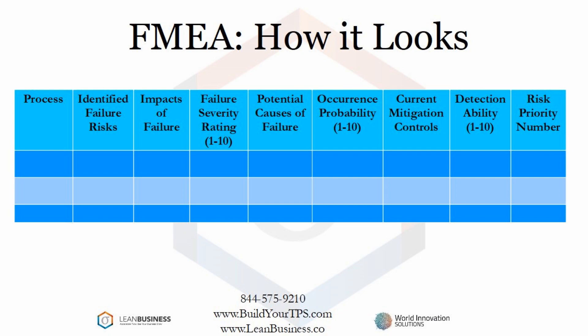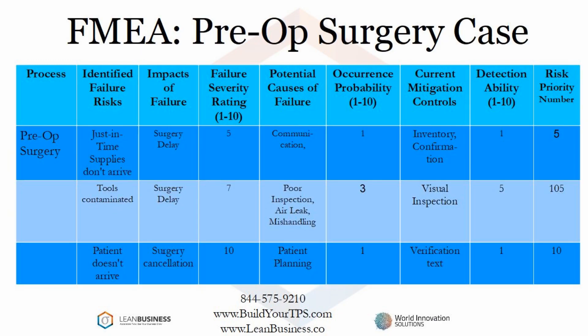This will become clearer with an example. This example involves either the build, modification, or just normal operations of a surgery. One of the success criteria of any surgery is the effort that goes on before the surgery starts, and that is what this example covers: pre-surgery operations. The first step is to brainstorm failure risks. I have selected three here: the first involves a just-in-time supply system, the second risk is contaminated surgery tools, and lastly, the patient does not arrive for their surgery.